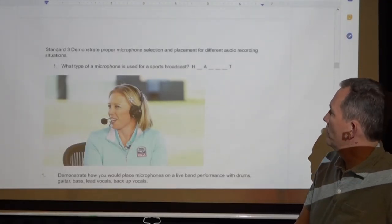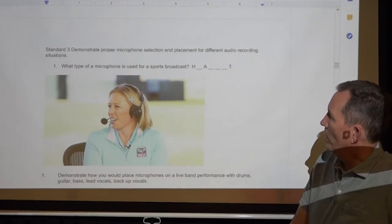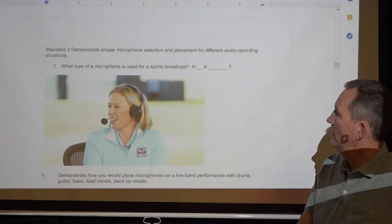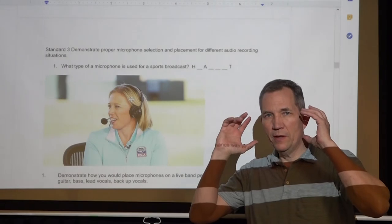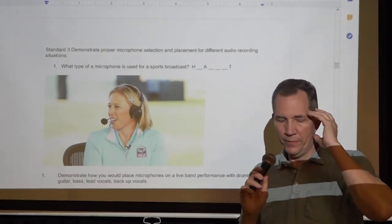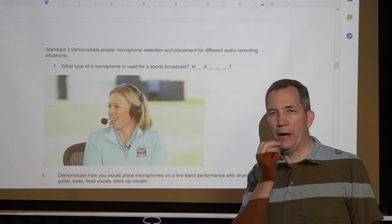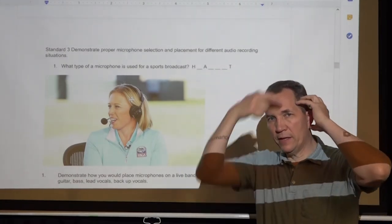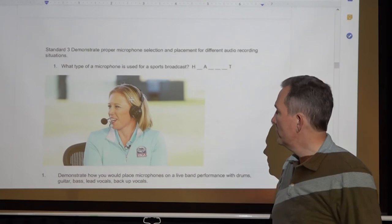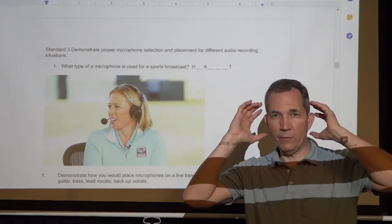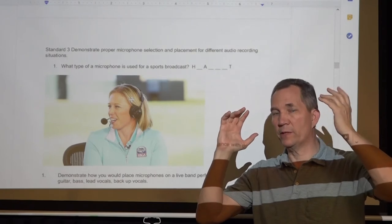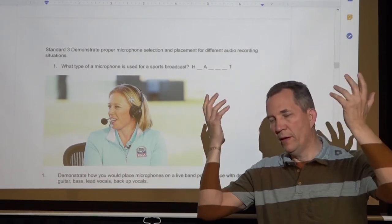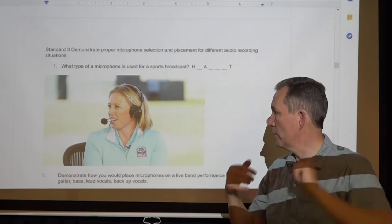Alright, here it says demonstrate proper microphone selection and placement for different audio recording situations. What type of a microphone is used for a sports broadcast? Well, that's a headset. So it's not just headphones because it has one more thing attached to it. That's what we call a headset. It's got a little headset microphone on there so you can talk and it's also got the muffs. Sometimes it's a single muff. Have you ever seen that? A headset that just has a microphone and one ear muff? So you can have a two headset which can give you stereo or maybe in some cases you hear yourself in one and you hear your co-anchor in another or the technical director or something in the other ear. But at any rate, often it's two ears and a microphone for a headset.